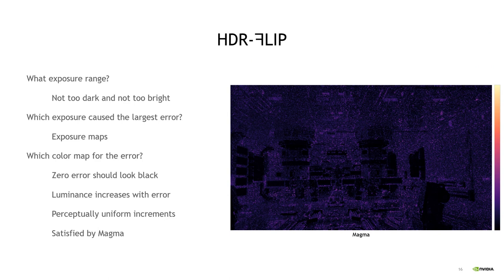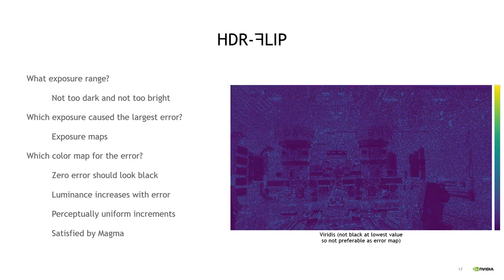With this color map, longer exposures are mapped to brighter colors. For example, we see that the errors on the library sign are perceived as largest under short exposures, since the exposure map is dark on the sign. Finally, we need to choose a color map for visualizing the error. This choice can have a significant impact on the interpretability of the presented error map. We use the magma map, as it maps zero error to almost black and then increases in luminance as the error increases. An alternative would be the viridis color map, but that would make the interpretation less intuitive, as one gets the impression that there are errors in the dark regions because they are not black.